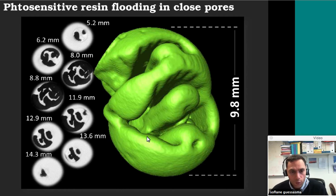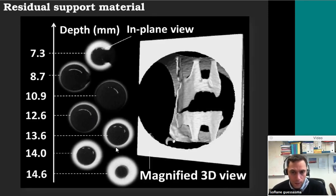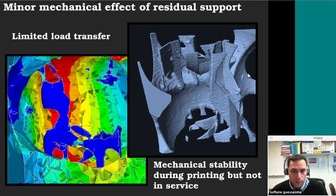But if you want to design more complex features, you can see some flooding of the resin inside the closed porous structure — and this is probably one of the drawbacks of this technology. If you want to design structures that are really closed and contain porosities, you can expect some resin flooding inside those pores. You also have some residual support structure inside the material, which prevents collapsing of the structure during processing. From simulation results, you can see there is no load transfer transmitted to the support material, indicating that the support does not really add to the mechanical performance of the structure.